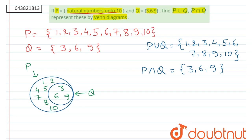Now as P intersection Q has element 3, 6, 9, this area will represent P intersection Q and this whole area including P intersection Q will represent P union Q.